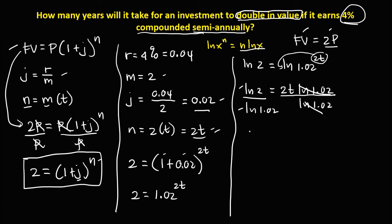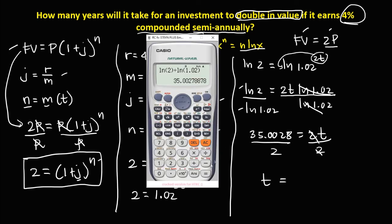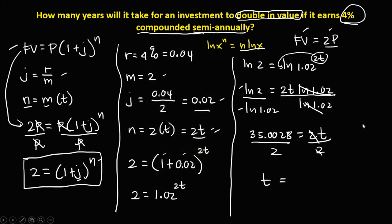So 35.0028 equals 2 times the time. Dividing both sides by 2, the time equals 35.0028 divided by 2, which is 17.5. Therefore, the time is equal to 17.5 years.